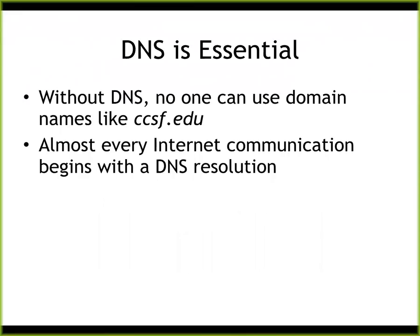Everything you do on the internet uses DNS. People occasionally hard code IP addresses into things like malware, but even malware can't really do that because you frequently move things to another address. Almost everybody uses alphabetical names like ccsf.edu for everything, but you can't communicate on the internet with that kind of name — you can only communicate with a numerical IP address. So there has to be a master dictionary that converts alphabetic names into IP addresses. That's distributed by DNS, and it turns out to be kind of a big mess.